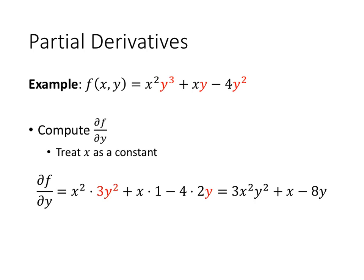Similarly, the partial derivative of f with respect to y — del f, del y — turns out to be 3x squared y squared plus x minus 8y. Again, we're treating the x's as constants and taking the derivative with respect to y.